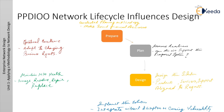The third phase is the Design phase. The initial requirements determined in the plan phase drive the network design activities. The design incorporates any additional data gathered during network analysis and network audit, and through discussion with managers and network users. The network design specification produced is a comprehensive, detailed design that meets current business and technical requirements and incorporates specifications to support availability, reliability, security, scalability, and performance. This design specification provides the basis for the implementation activity.